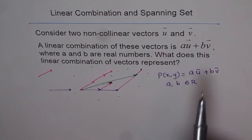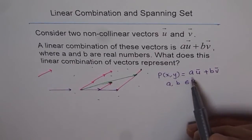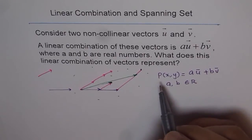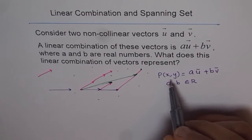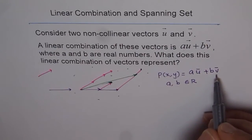So we say any vector p, x, y, in the plane, in which two vectors u and v are there, can be equal to linear combination of u and v.